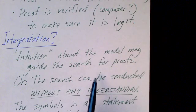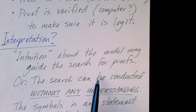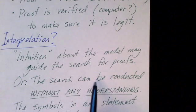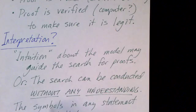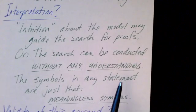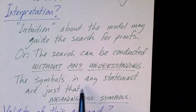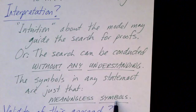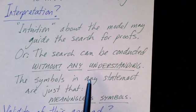So we can have automated theorem provers that can look for a proof, that can perform this search without any understanding. In other words, the symbols in any statement in the proof are just that. They are meaningless symbols. So you can imagine proving something without understanding what it is you are proving.